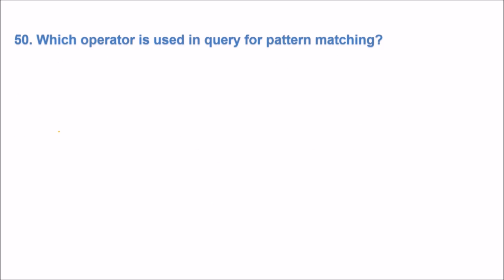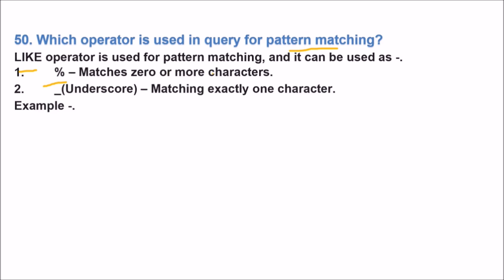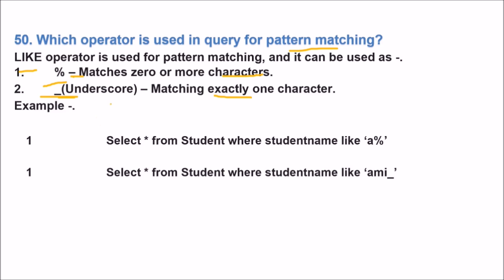Which operator is used in query for pattern matching? You use LIKE operator. You can use the underscore also. You can use the percent sign. This percent matches zero or more characters. Percent means zero or more characters. Underscore means it will be matching exactly one character. LIKE operator you will use. After that you will use this for the pattern matching. For example, SELECT star FROM student WHERE student name LIKE 'a%'. So it will give you all the name which will start from a. And in the second query SELECT star FROM student WHERE student name LIKE 'AMI_'. This will give you Amin and Amit. This is going to give all these names.